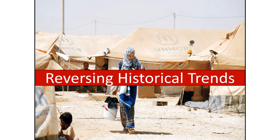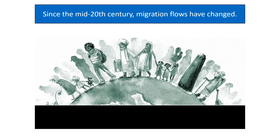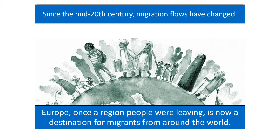Reversing historical trends. Since the mid-20th century, around 1950, migration flows have changed. Europe, once a region people were leaving, is now a destination for migrants from around the world. In the 1800s, it was mainly people from Europe migrating to the US, but since 1950, hardly any Europeans migrate to the US because Europe's population has stopped growing and they're highly developed. Instead, people from other regions want to go to Europe.